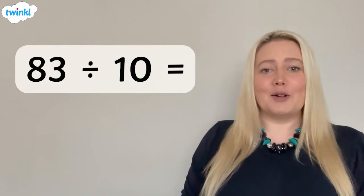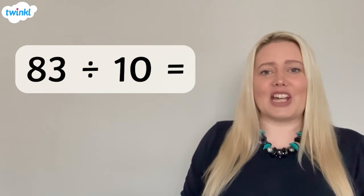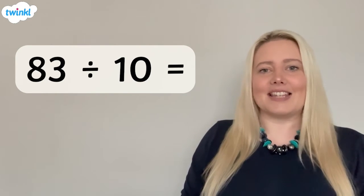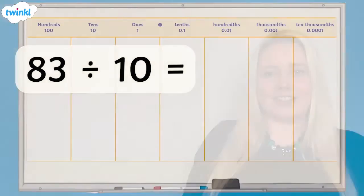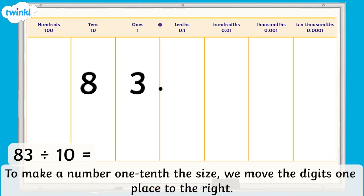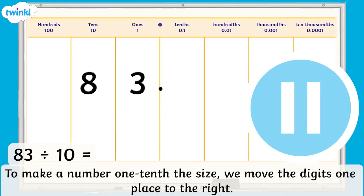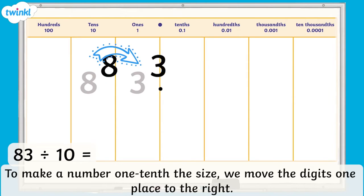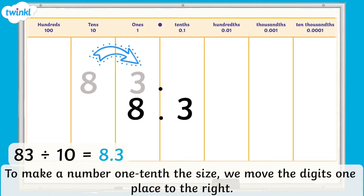Now it's your turn. Pause the video and use the place value chart to find the answer to 83 divided by 10. Remember, to make a number 1 tenth its size, we move each number in the place value chart one place to the right. You should have moved each digit one place to the right, making the number 1 tenth the size. We now have 8 ones and 3 tenths. So, 83 divided by 10 equals 8.3.